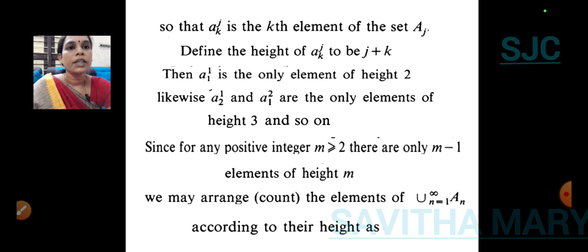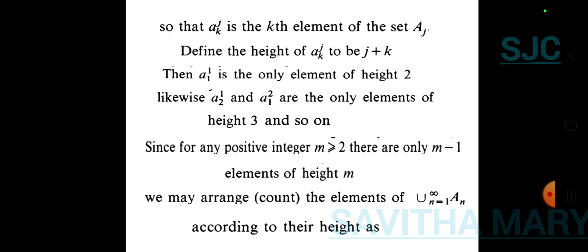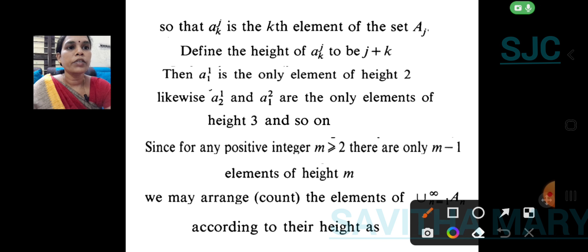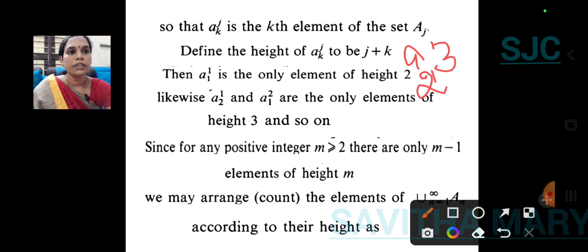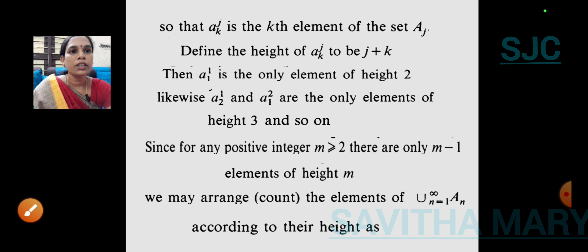So, the superscript and subscript are added as J plus K, which is taken as the height of the element. Here, A subscript K superscript J is the Kth element of the set Aj. For example, A1 superscript 1 means the first element of set A1, and A2 superscript 3 means the second element of set A3. You can identify any element using its height J plus K.